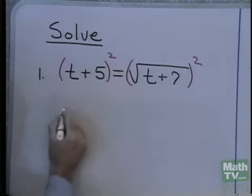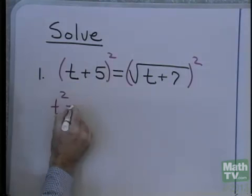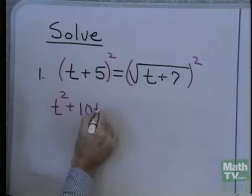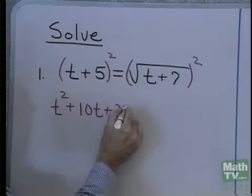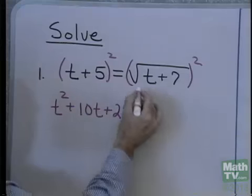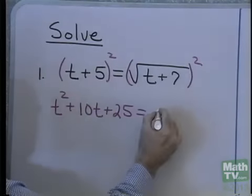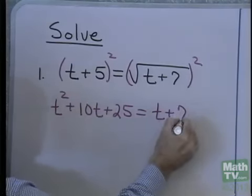t plus 5, quantity squared, is t squared plus 10t — don't forget that middle term — plus 25. The square root of the quantity t plus 7, squared, is t plus 7.